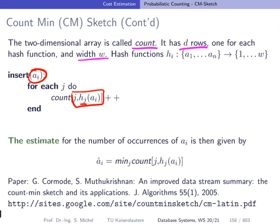Then, after we process the entire sequence, and we want to know how often ai appeared in the sequence, we will again for each of these hash functions hj look up the position to get the counter, and then take the minimum of these counters. And this is the estimate of the number of occurrences of object ai.